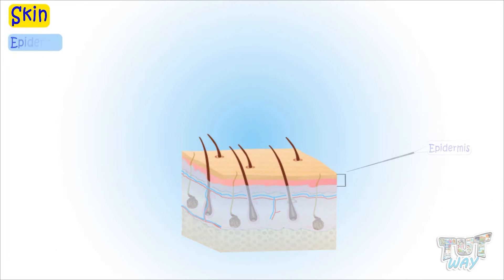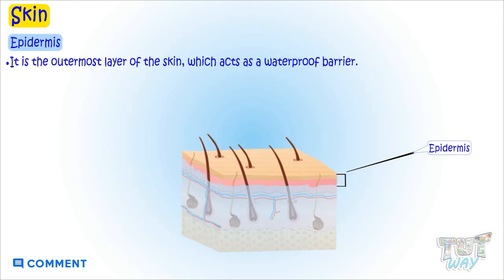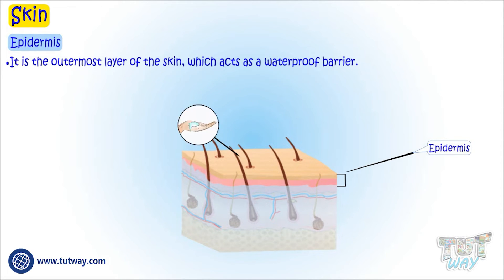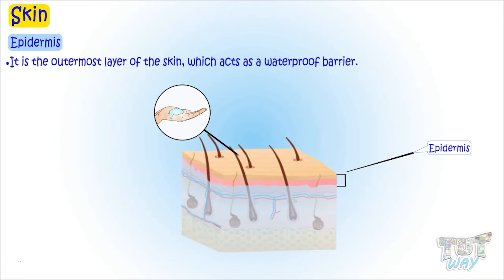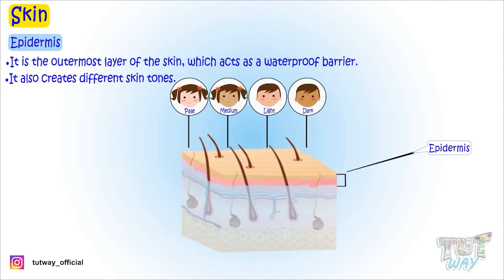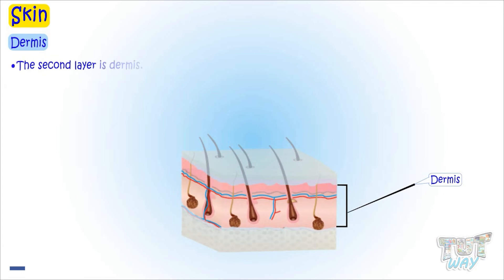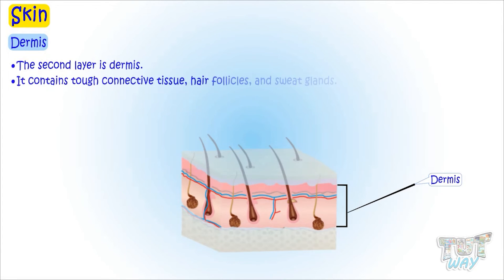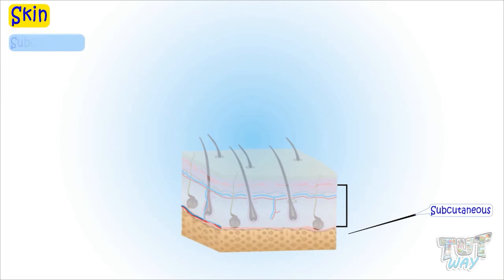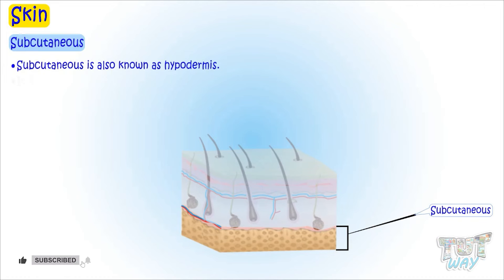The epidermis is the topmost or outermost layer of the skin. It acts as our waterproof barrier and also creates different skin tones. The second layer is the dermis. It contains tough connective tissue, hair follicles, and sweat glands. The deeper layer is subcutaneous, also known as the hypodermis. It is mainly made up of fat and connective tissue.